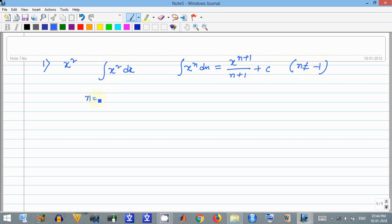Here n equals 2, which is not equal to minus 1, so this will be x to the power 2 plus 1 divided by 2 plus 1 plus c, which equals x to the power 3 divided by 3 plus c.